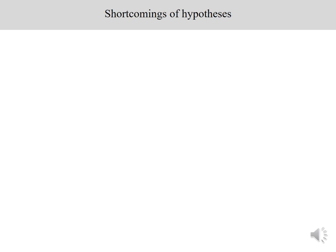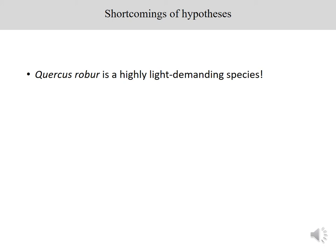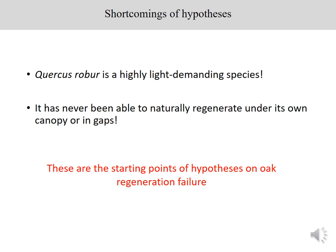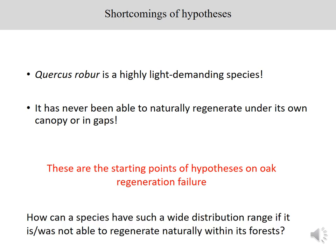But I think there are at least two main shortcomings of this hypothesis. One is that both hypotheses assume oak is a highly light-demanding species. The second, especially true for the wood pasture hypothesis, is that it assumes oak has never been able to naturally regenerate under its own canopy gaps. For me, it is impossible to imagine that a species with such a wide distribution range — at least in the Carpathian Basin — hasn't been able to naturally regenerate.